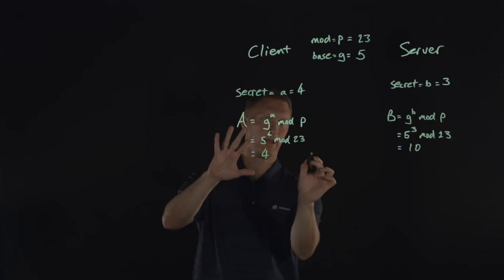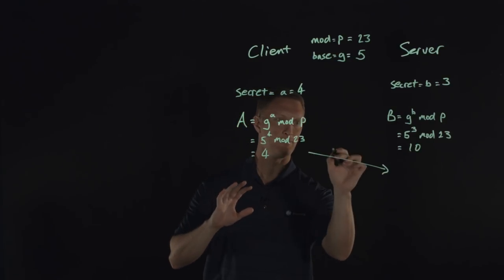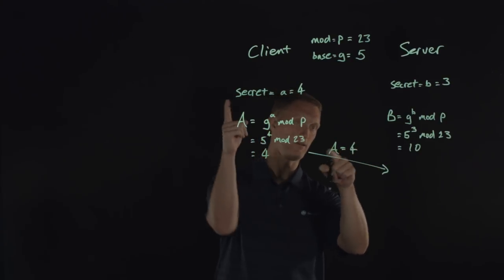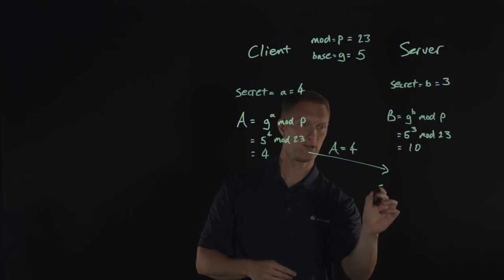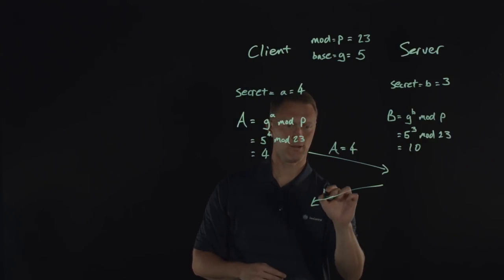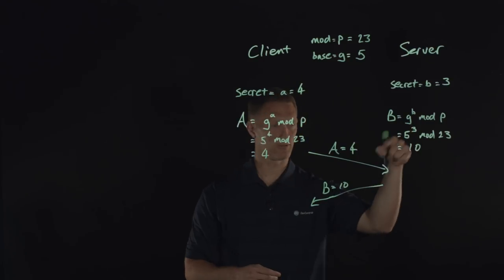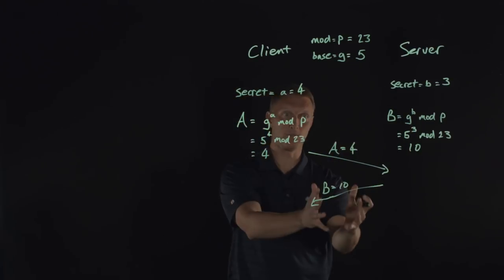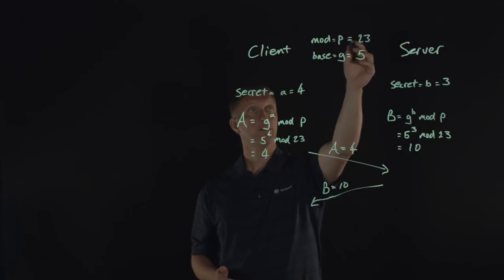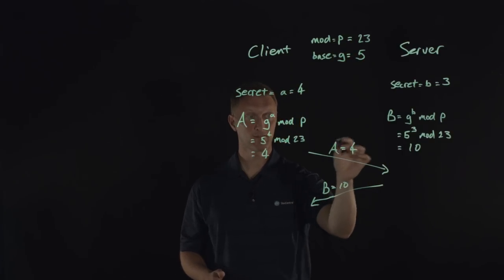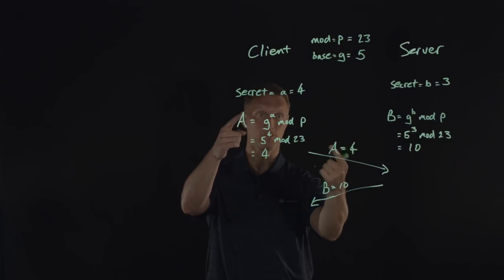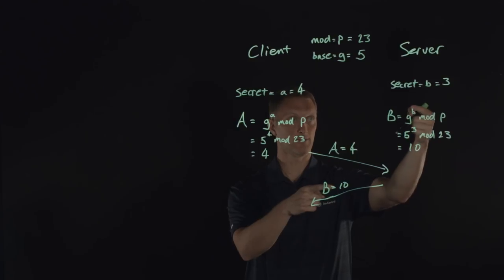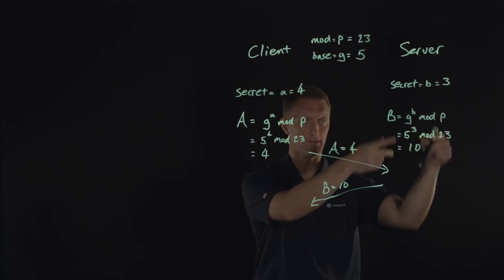What we're going to do is the client is going to share that big A value — which equals 4 — with the server. Likewise, the server is going to share big B — which equals 10 — with the client. So if you're a bad guy in the middle, you have the value for P, you have the value for G, you now have the calculated value A derived using the secret value, and you also have the calculated value B derived using the server's secret value.